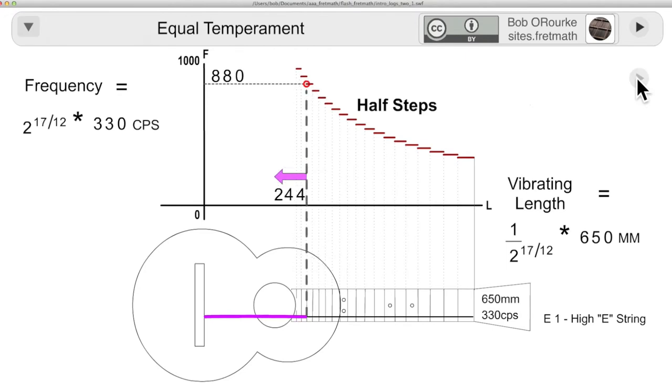The semitone intervals are shown here as 2 to the 1/12th, 2 to the 2/12th, 2 to the 3/12th, etc. And in each case, the numerator over the 12th indicates the fret number on the guitar fretboard. All the numbers here are approximated to the nearest whole number. The details of decimals would just get in the way of explaining and understanding this stuff.